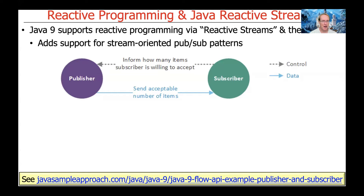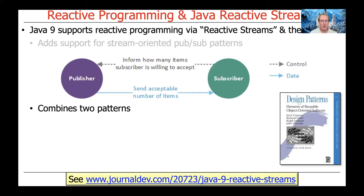A publisher is told by a subscriber how many items the subscriber is willing to be passed at any given point in time. That's a form of flow control we'll talk about later. The publisher then sends out that many items to the subscriber or subscribers, because there could be more than one. The publisher-subscriber model here really combines two patterns that we've undoubtedly seen before.